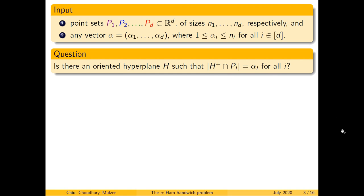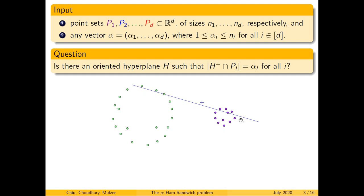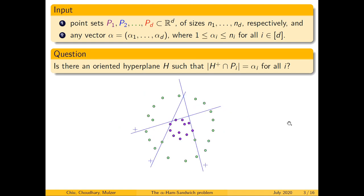In this simple example we have two point sets in the plane, and the space above this line contains three green points and four violet points. In this case we can try many different combinations of alpha_1 and alpha_2 for the green and the violet points.